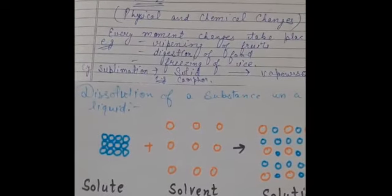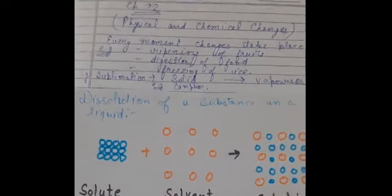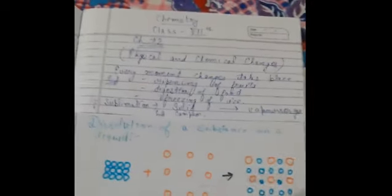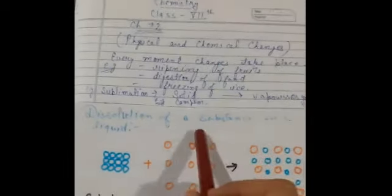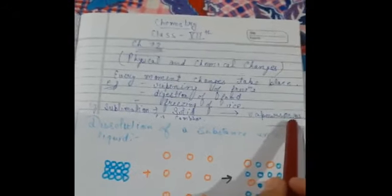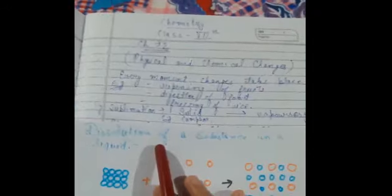Another example of a change is sublimation. Sublimation is that kind of change in which a solid directly changes from solid phase to gaseous phase without undergoing any liquid stage. So when a solid changes directly into vapours or gas, it means sublimation has taken place.